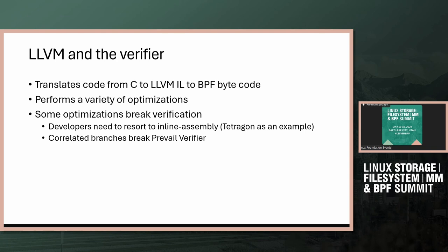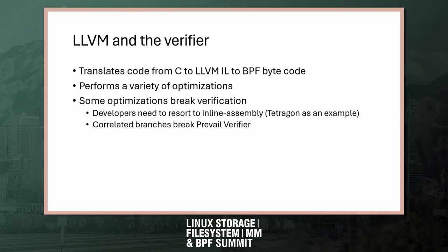Likewise, the prevail verifier — which is not the one in the Linux kernel, but is used by other projects — is broken by a particular optimization that LLVM does, where it produces correlated branches.